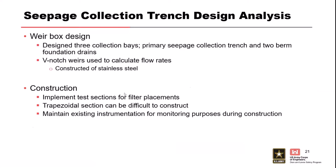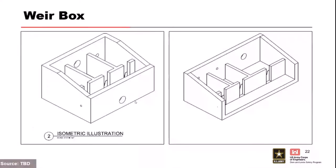Here are the two weir boxes installed on this project — pretty straightforward, with a couple of bays and V-notch weirs between 20 and 30 degrees so operations staff could monitor and measure flows.